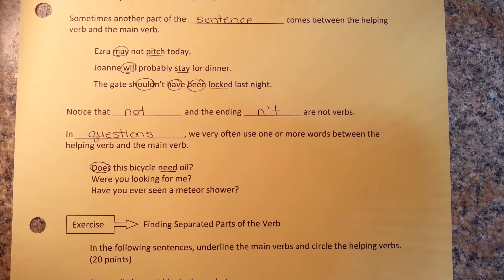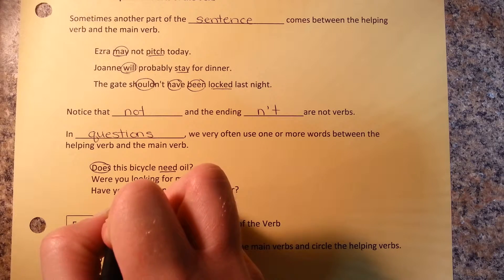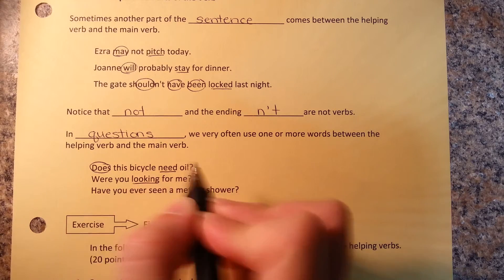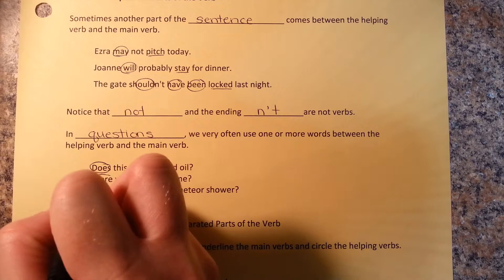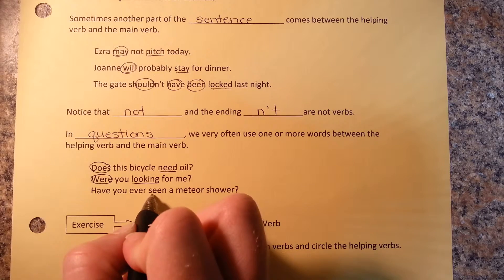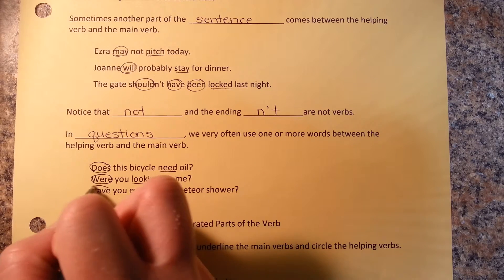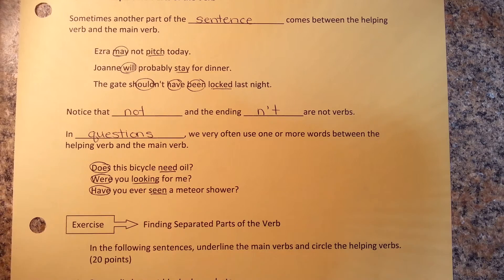Were you looking for me? Looking is the main verb and were is the helping verb. Have you ever seen a meteorite shower? Seen is the main verb and have is the helping verb.